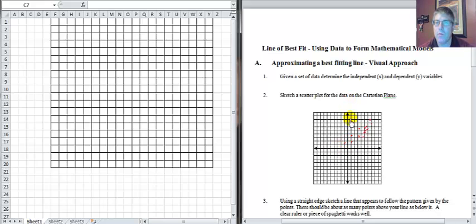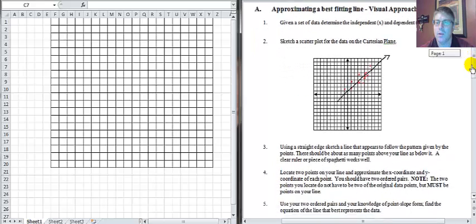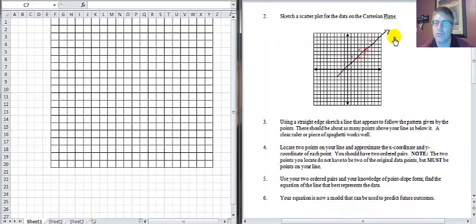Then what we'll do is draw what we feel is a straight line or a trend line through the data, something that approximates what the data will look like. You use a straight edge and follow the pattern of the ordered pairs that you plotted.